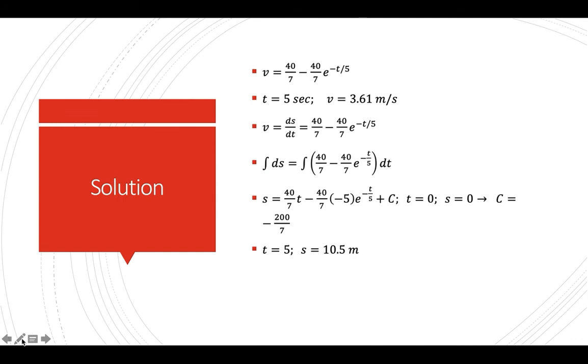And continue. At t equals 5, now we substitute here. That gives you 3.61 meters per second.